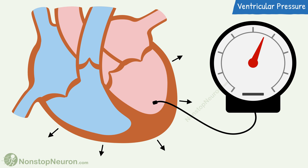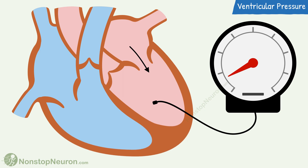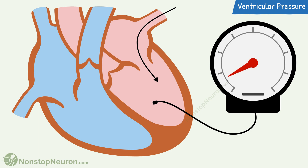Then the ventricles relax as closed chambers, resulting in a sharp fall in pressure. Eventually the pressure falls below that in the atria, so the atrioventricular valves open and blood rushes into the ventricles. Despite this filling, the pressure continues to fall because the ventricles are relaxing. Then with continued filling of blood from veins through the atria into the ventricles, the pressure gradually rises.